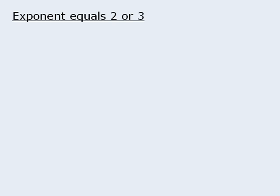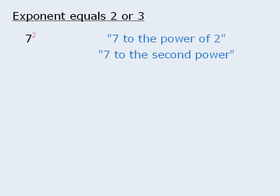Expressions where the exponent is 2 or 3 can be read a little differently. For example, we can read this expression as 7 to the power of 2, or 7 to the second power, or 7 squared. So if the exponent is 2, we can say that the base is squared. In this example, 7 squared is equal to 49.